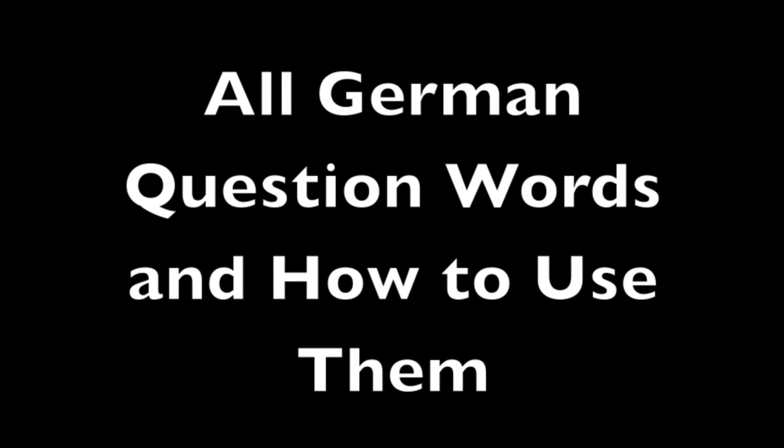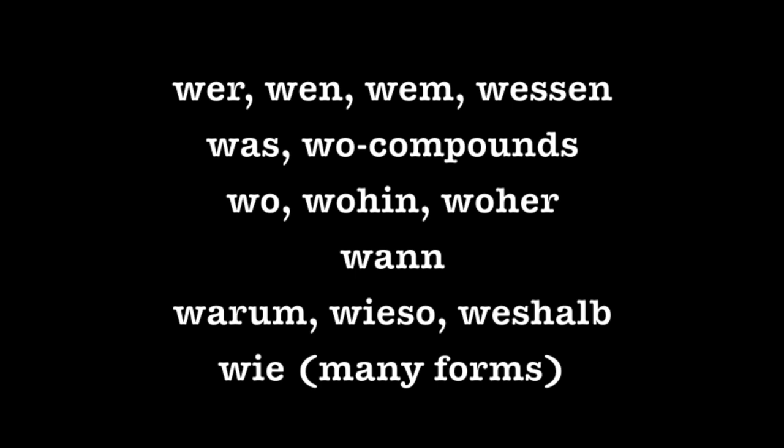Today we're going to talk about the question words in German and how to use them, and in the process we might actually help out your grammar in other areas as well, including your English grammar. Question words on my list for today are: Wer, Wen, Wem, and Wessen — those four all mean a form of 'who'. Was and the wo-compounds both mean 'what'. Wo, wohin, and woher all mean some form of 'where'. Wann means 'when'. Warum, wieso, and weshalb all mean 'why'. Wie and its many forms all mean 'how'.